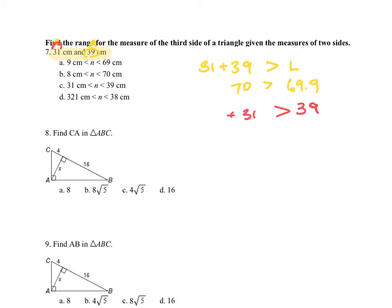What do I add to 31 to get 39? Well, that would be 8. So I have to have something greater than 8, and I have to have something less than 70. 69.9 is less than 70. So this right here, this is my best answer.